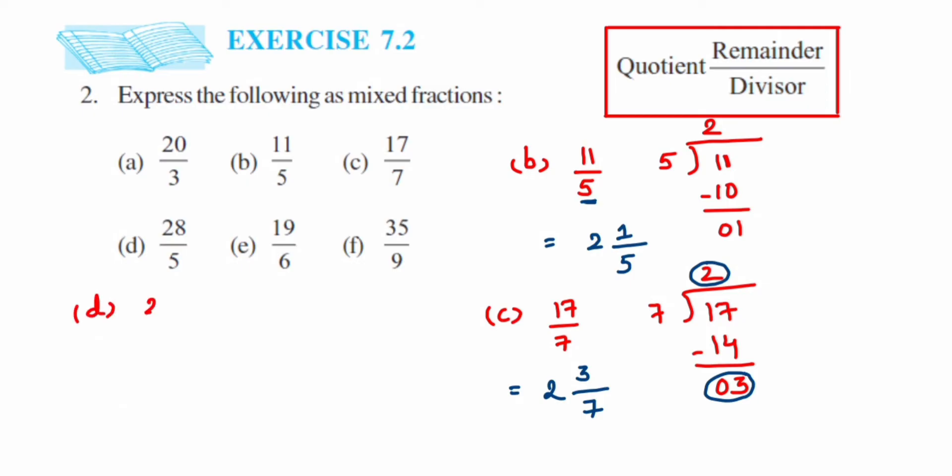Let's go for the next one, D. We have 28 upon 5. Divide it. 5 times 5 is 25, subtracted gives remainder 3. When you write this in mixed fraction: 5 is the denominator, the quotient is 5, and the remainder is 3. So it's 5 and 3/5.